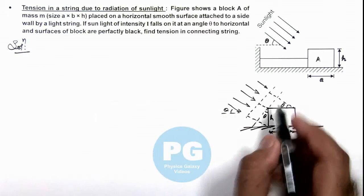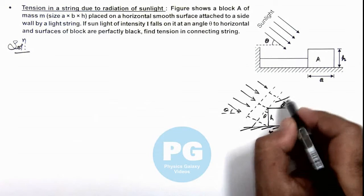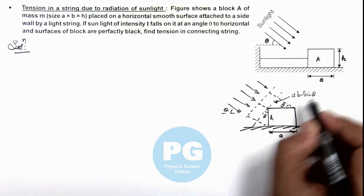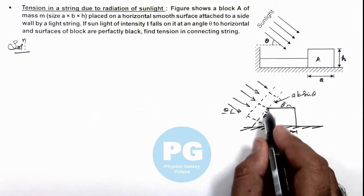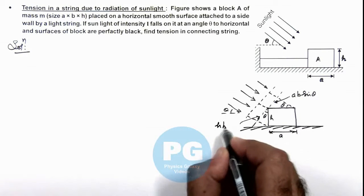So here we can see, if this area is ab, then we can simply calculate this area as ab sinθ. And if this area is hb, then we can use this area as hb cosθ.